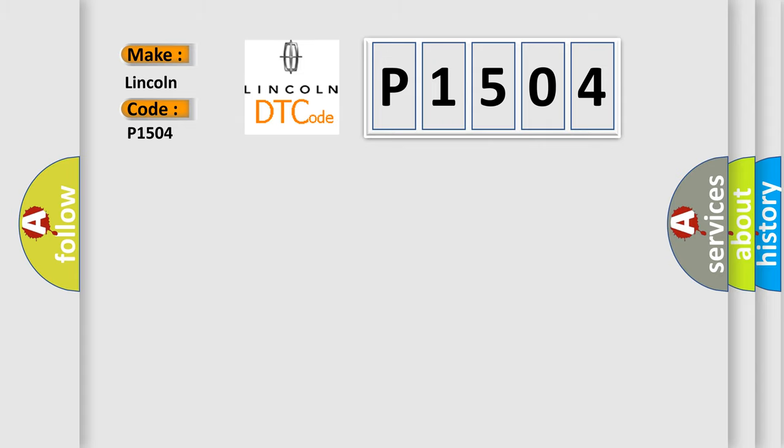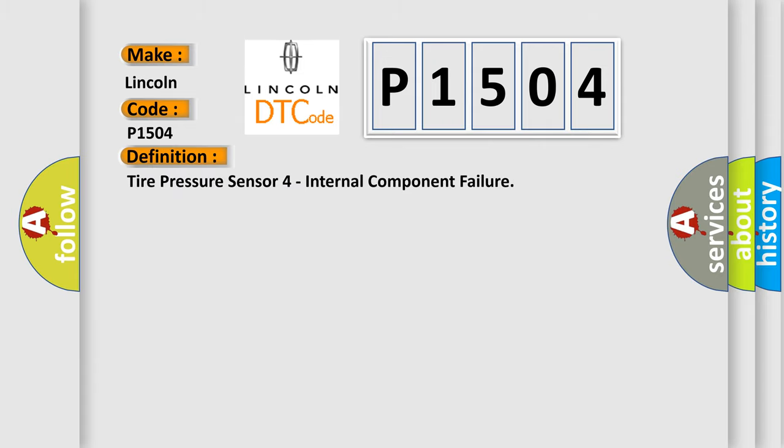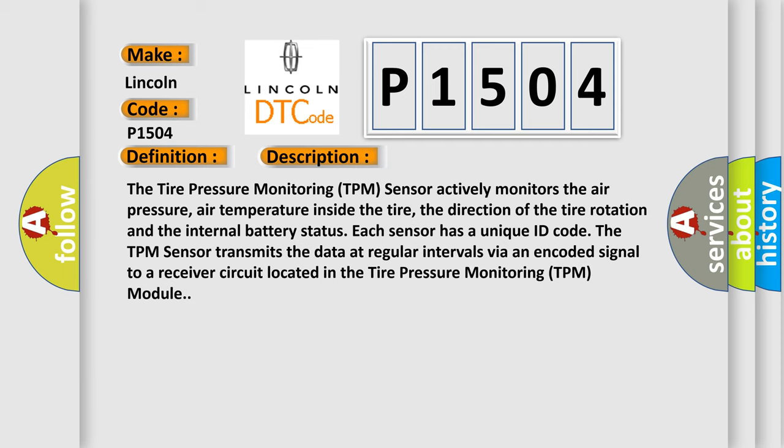The basic definition is: Tire Pressure Sensor Internal Component Failure. The Tire Pressure Monitoring (TPM) sensor actively monitors the air pressure, air temperature inside the tire, the direction of the tire rotation, and the internal battery status. Each sensor has a unique ID code. The TPM sensor transmits the data at regular intervals via an encoded signal to a receiver circuit located in the Tire Pressure Monitoring (TPM) module.